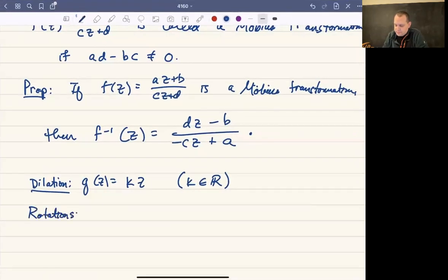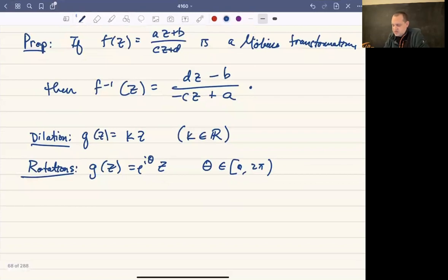Rotations are functions where you have g(z) = e^(iθ) times whatever your original thing is. So rotations are ones where you're going to rotate by θ degrees. And here, θ, we might as well just pick a branch. Let's say it goes from 0 to 2π. So those are dilations and rotations.